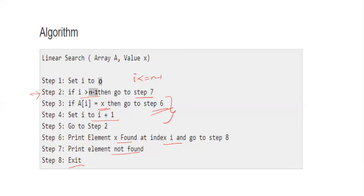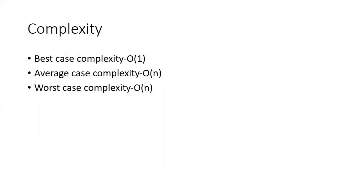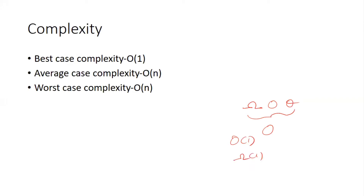Next is the complexity of linear search. The best case is when the element is found at the first position. The worst case is when the element is at the last position or not found at all.